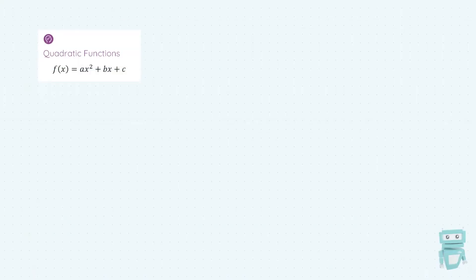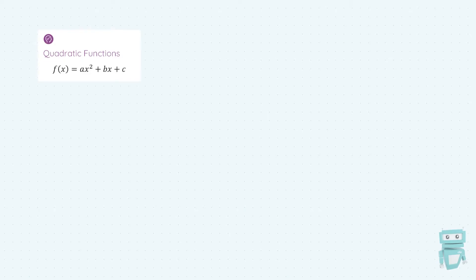Hey there, it's Stephen here with StudyClix, and in this video we're going to look at graphing quadratic functions and some of the questions that tag along with these graphs. Quadratic functions look like this: f of x equals ax squared plus bx plus c. That's the form of a quadratic function, and it's made quadratic because it has an x squared term.